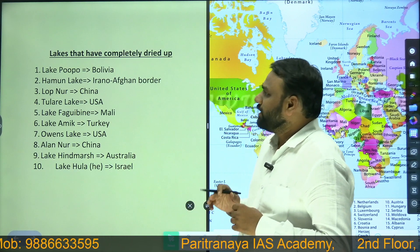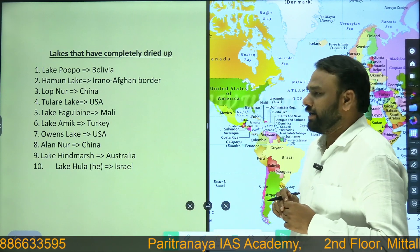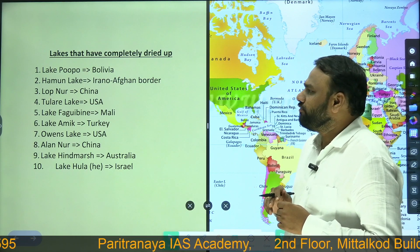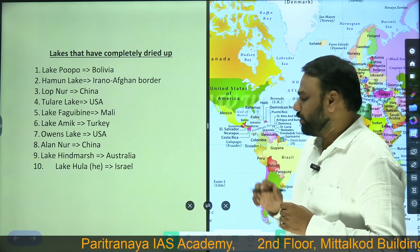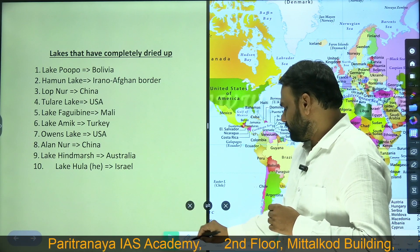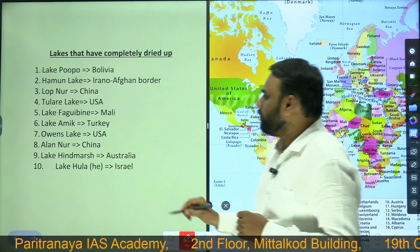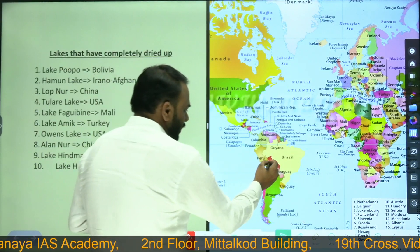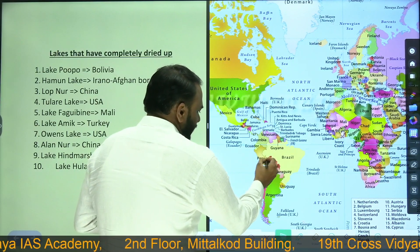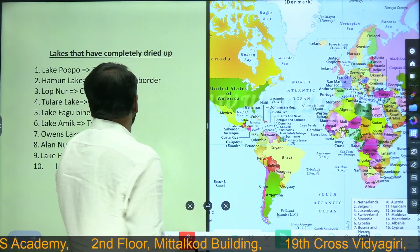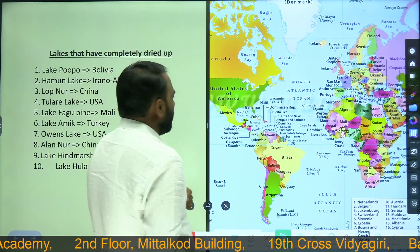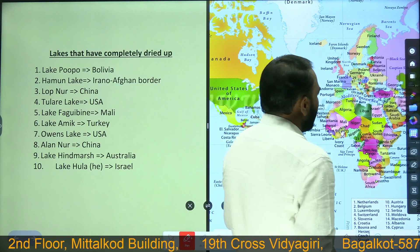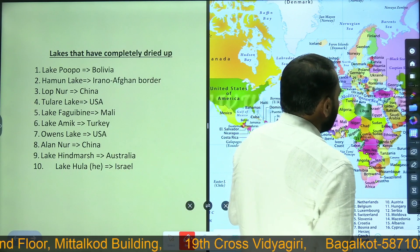We shall begin with the lakes that are completely dried up. The first one is Lake Popo, which is present in Bolivia. Bolivia is located in Latin America. Next is Hamun Lake, which is located on the Iran-Afghan border.